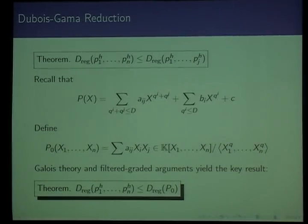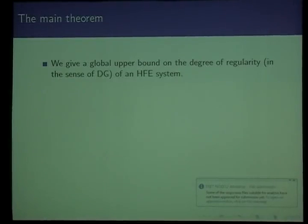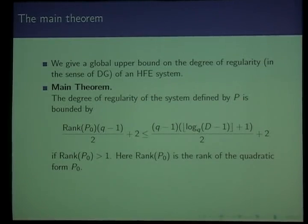So what Tim has talked about by now was everything done before. So what I will talk about is what we have done after that. I'll present first our main theorem. Basically what we did is we give a global upper bound on the degree of regularity in the sense of Dubois and Gamma for the HFE system. And the main theorem are given as the following. So the degree of regularity of the system defined by P is bound by the following formula. Rank of P0, so remember the P0 introduced earlier is a bilinear form, so if you view it as a matrix and it has a rank, and then times Q minus 1 over 2 plus 2. So this is the main result of us.